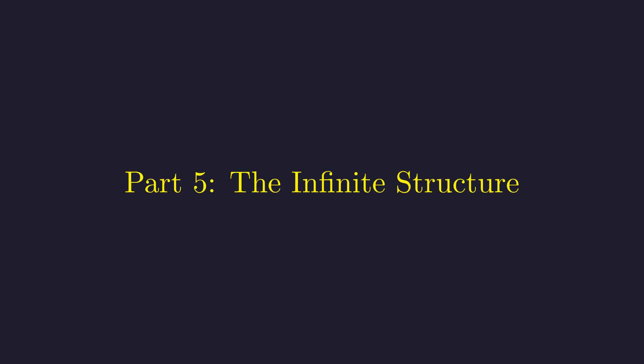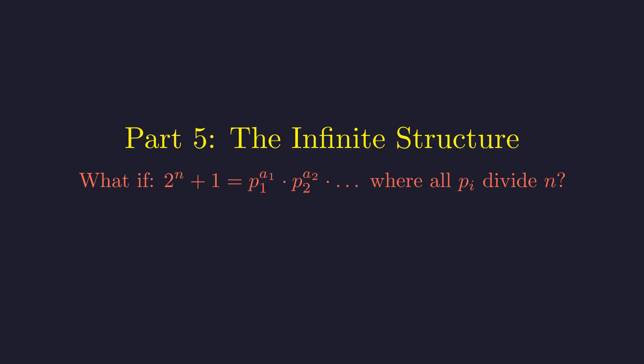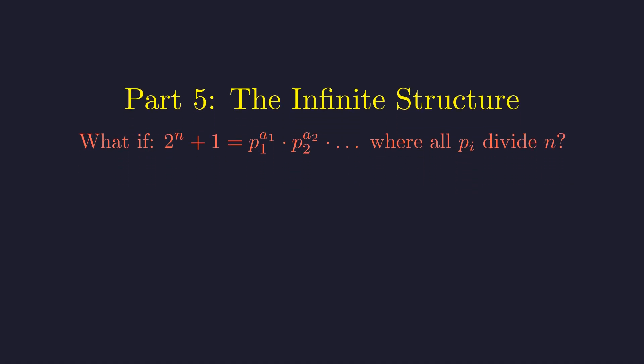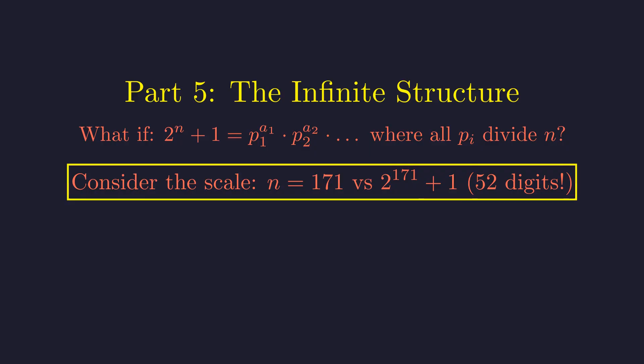This construction process is guaranteed to work indefinitely, creating an infinite tree-like structure of solutions. But what if it didn't? What if the construction fails? This would mean that for some solution n, the number 2 to the n plus 1 is composed only of prime factors that already divide n. Consider the sheer scale. 2 to the n plus 1 is vastly, almost unimaginably larger than n. For n equals 171, we'd be claiming that 2 to the 171st plus 1, a number with 52 digits, is made only of 3s and 19s. This seems profoundly unlikely. How could such a colossal number be built using only the same small prime building blocks as the tiny number n?